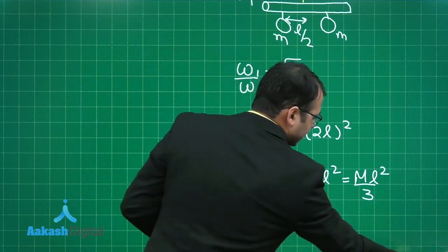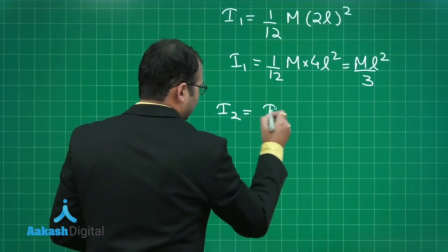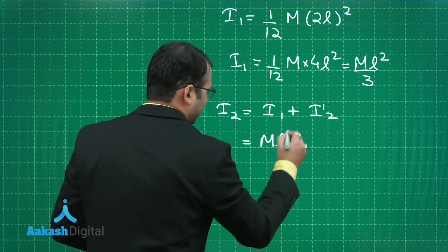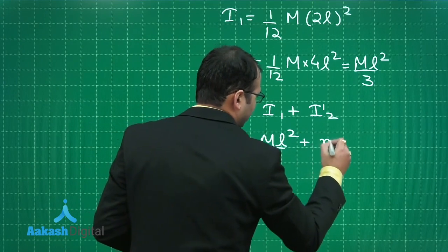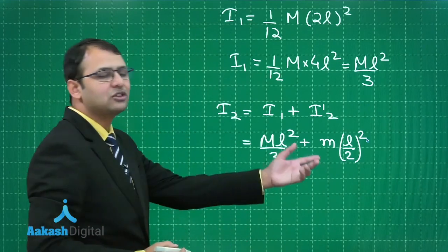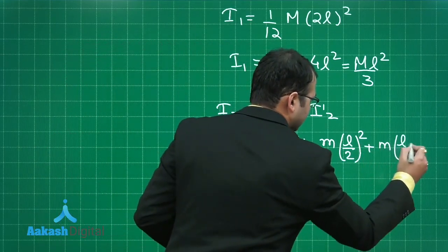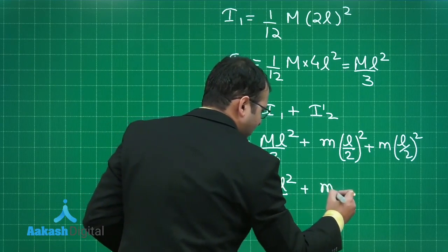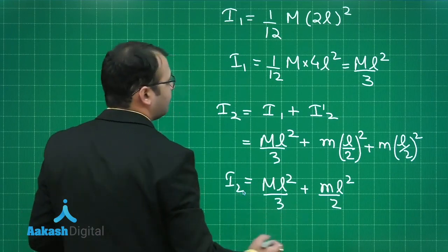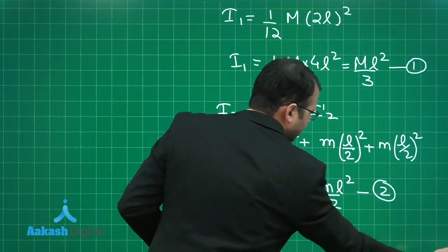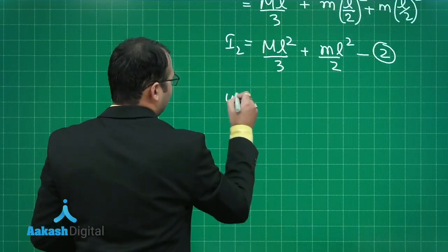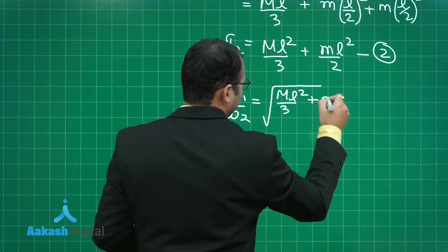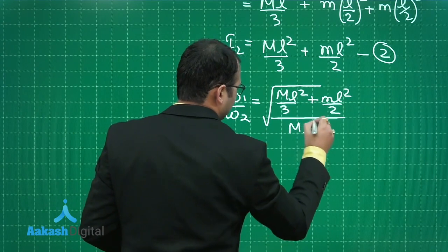We have I1. In the second case, when masses m are added, I2 equals the moment of inertia of the rod plus the moment of inertia of the two point masses. So I2 = ML²/3 plus two times m(L/2)², which gives ML²/3 plus mL²/2. Consider I1 as equation 1 and I2 as equation 2. Putting these values into the omega ratio: omega_1/omega_2 = square root of (ML²/3 + mL²/2) divided by (ML²/3).